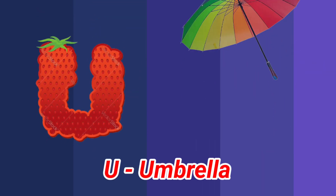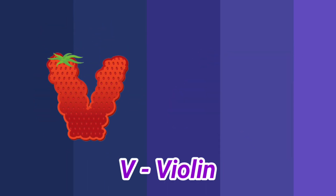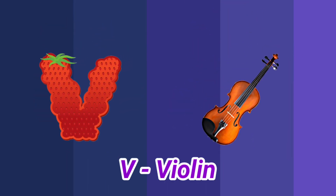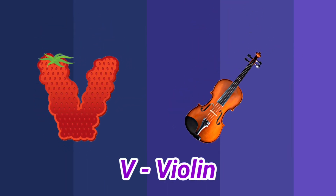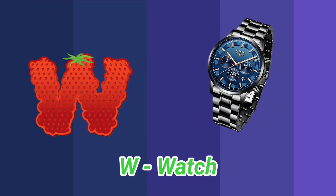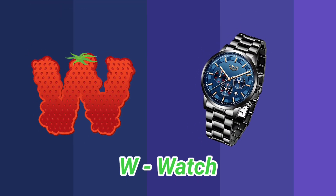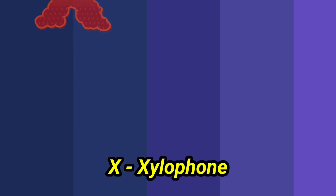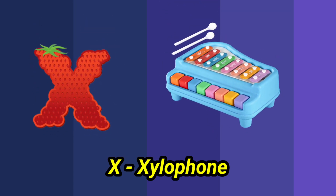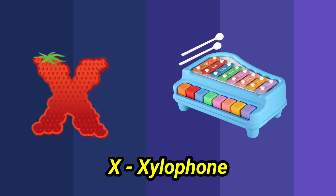U is for umbrella, u-u-u-umbrella. V is for violin, v-v-violin. W is for watch, w-w-watch. X is for xylophone, z-z-xylophone.